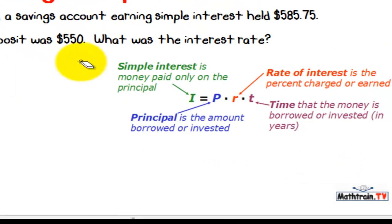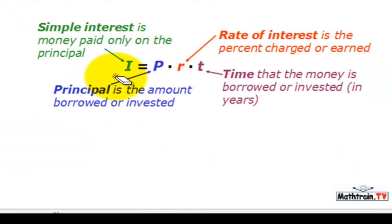Let's remember that the formula that we use is I equals PRT. I being the simple interest, P is the principal, which is the amount that you initially borrow or invest, R being the rate, our percentage, and T will be the amount of time that we are borrowing or investing our money, and it's written in years.